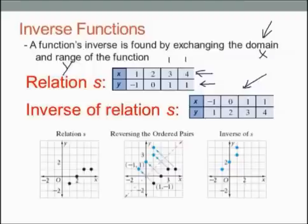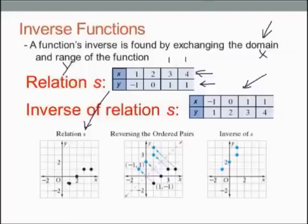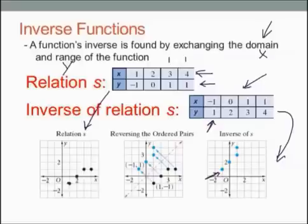So as you can see down here on the graphs, I've taken the relation and that's its graph right there. So I have point 1, negative 1 right there, and then 2, 0; 3, 1; and 4, 1. And then I have the inverse graph over here, and negative 1, 1 is my first point right there, and so on: 0, 2; 1, 3; 1, 4.